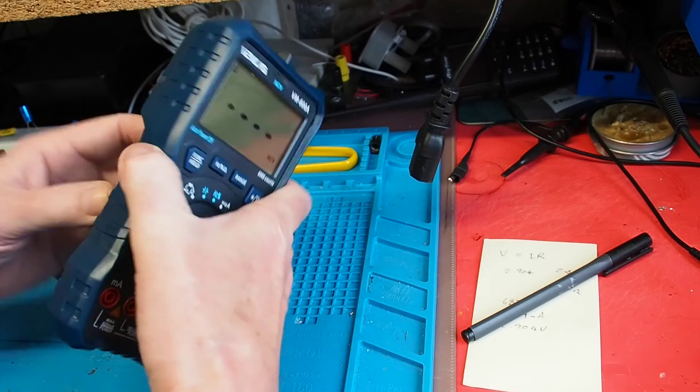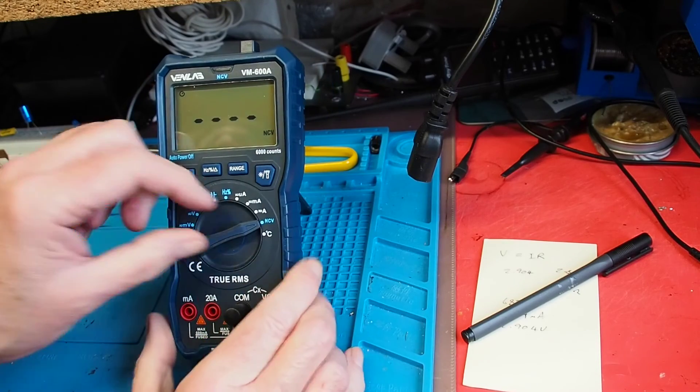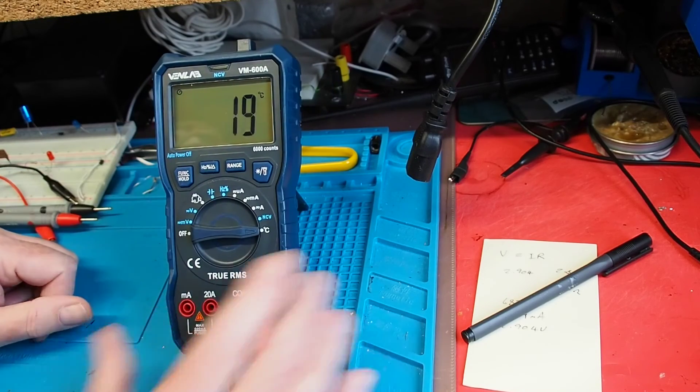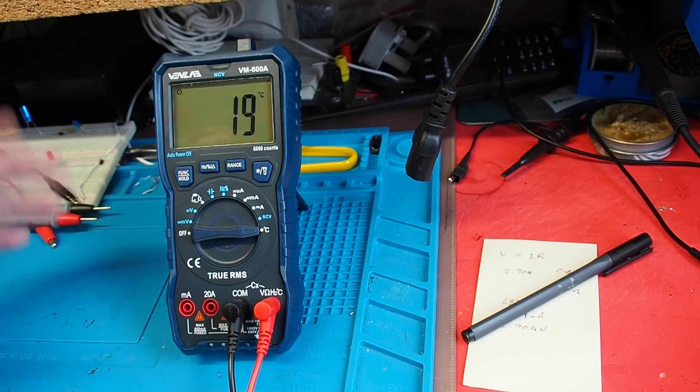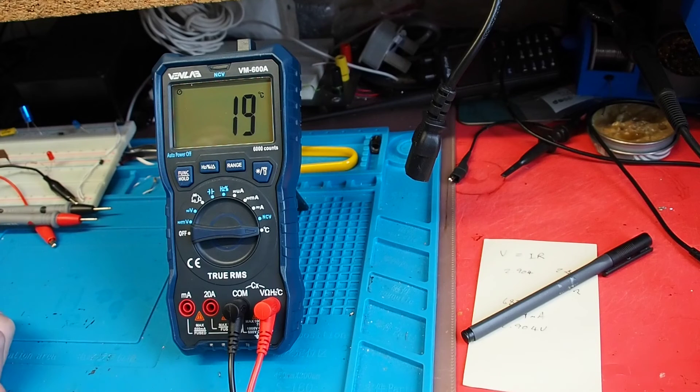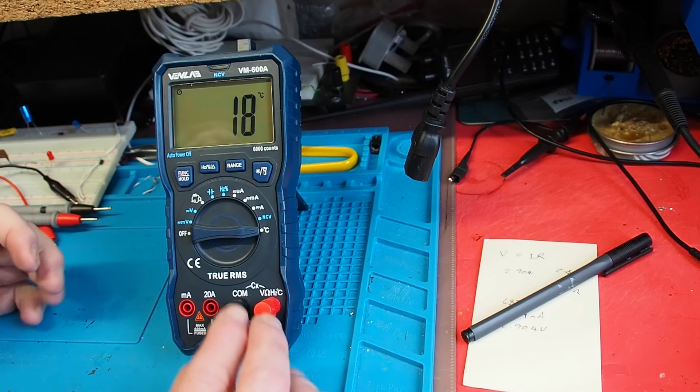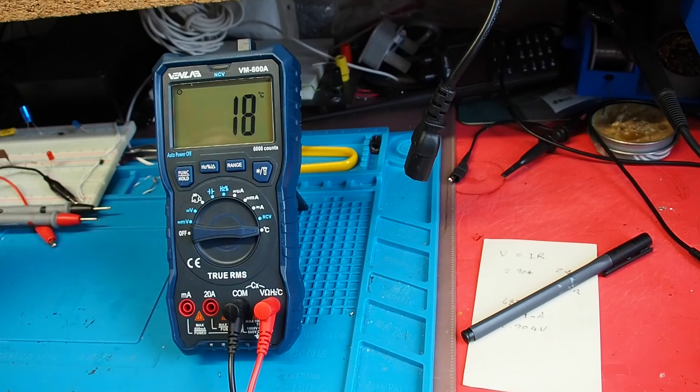Switching to temperature gives us the ambient temperature, obviously the internal sensor for the meter. Included with the meter there is a thermocouple which you can attach here which would give you external temperature reading.